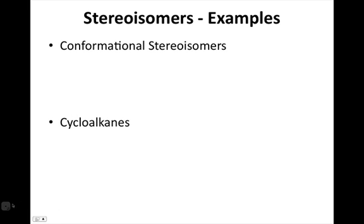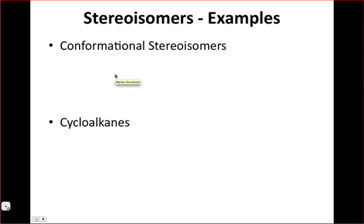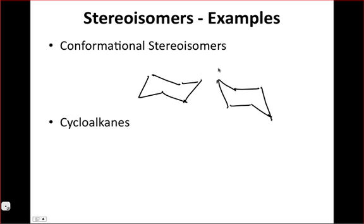Conformational stereoisomers, as we talked about before with that example of butane. Another example I'll give you to think about is the example of chair cyclohexane, which we'll hit hard in the next chapter. But these two cyclohexane chairs are actually conformational isomers, but they're actually also, let me throw a substituent on there, just to really hit the point home, let's just call it R. These two are stereoisomers, they're not superimposable, but they're also interconvertible by conformational changes. So those are conformational stereoisomers, just like we saw with the two kinds of butane.